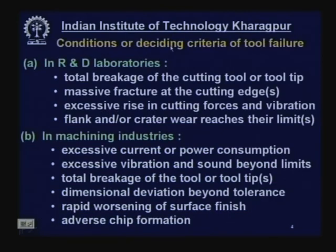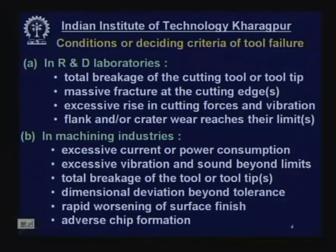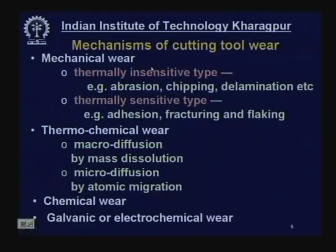Now the deciding criteria of tool failure — how does one understand that the tool has failed? When the tool fails, a lot of problems arise in machining and machinability gets lost. The tool may become totally unable to machine and the machine may also be damaged. The tool has to be withdrawn before or immediately after it fails. There are two methods: one in R&D laboratories and one in machining industries.